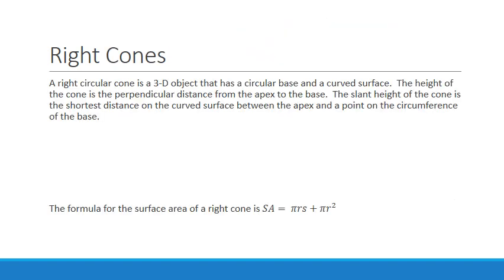Right cones. A right circular cone is a 3D object that has a circular base and a curved surface. The height of the cone is the perpendicular distance from the apex to the base. The slant height of the cone is the shortest distance on the curved surface between the apex and a point on the circumference of the base. By the way, a right circular cone is usually just referred to as a right cone.